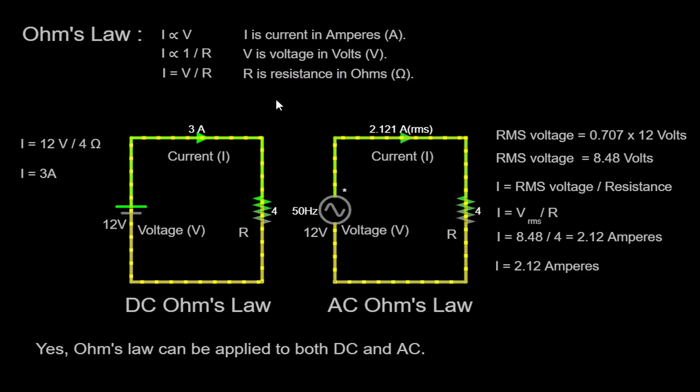In our DC circuit, we have a 12 volt DC voltage source and a resistor with a resistance of 4 ohms. Applying Ohm's law, we can calculate the current flowing through the circuit by dividing the voltage by the resistance: I = 12 volts / 4 ohms = 3 amperes. Therefore, in this DC circuit, the current flowing through the resistor is 3 amperes.